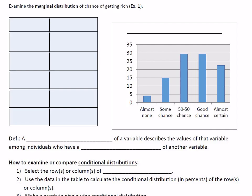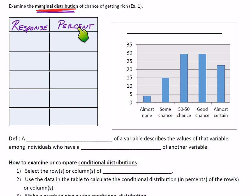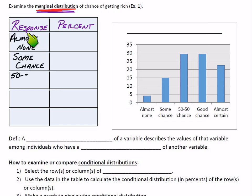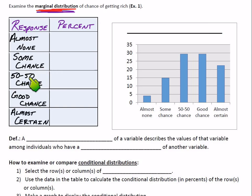Let's examine the marginal distribution of chance of getting rich. We can write the response and the percent. We could write these in the margins next to the two-way table. The responses were: almost no chance, some chance, 50-50 chance, good chance, and almost certain. We could go right next to that table and write these percentages in the margin. Think about that for your marginal distribution.